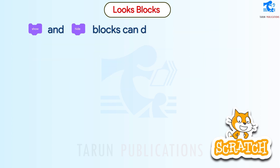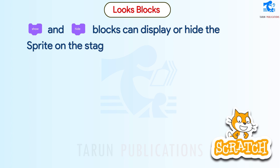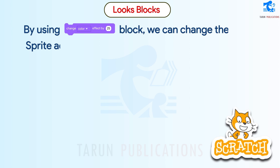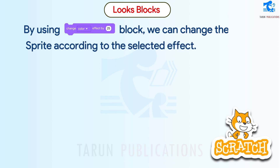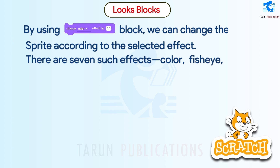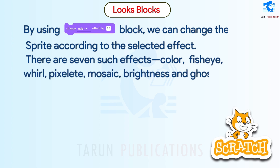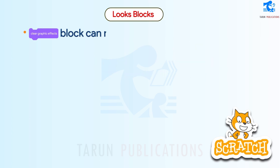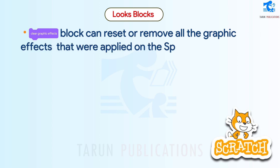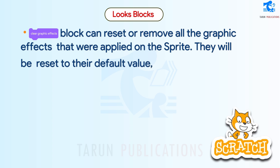Blocks can display or hide the sprite on the stage. By using another block, we can change the sprite according to a selected effect. There are seven such effects: color, fisheye, whirl, pixelate, mosaic, brightness, and ghost. A block can reset or remove all the graphic effects applied on the sprite; they will be reset to their default value of zero.